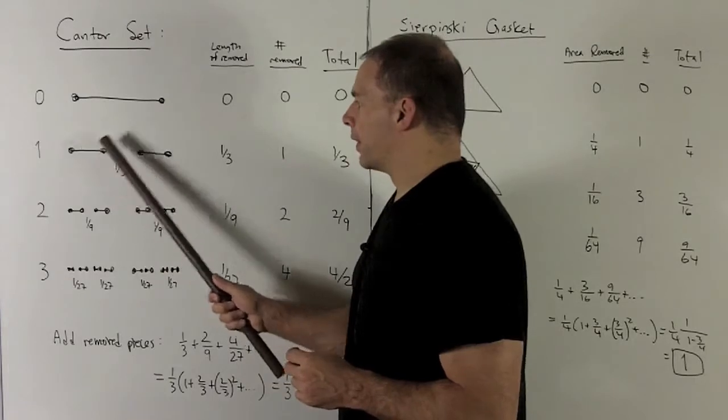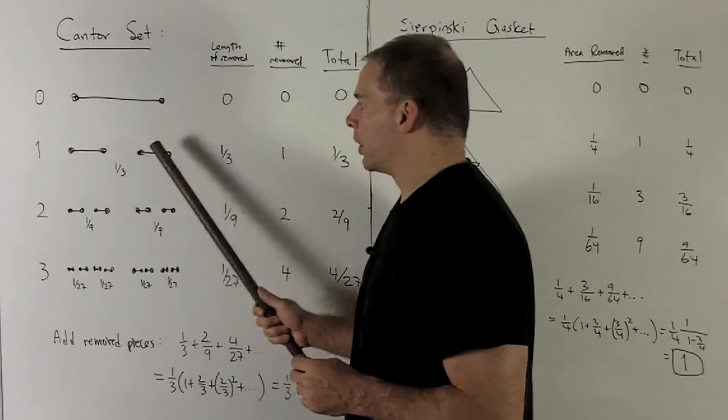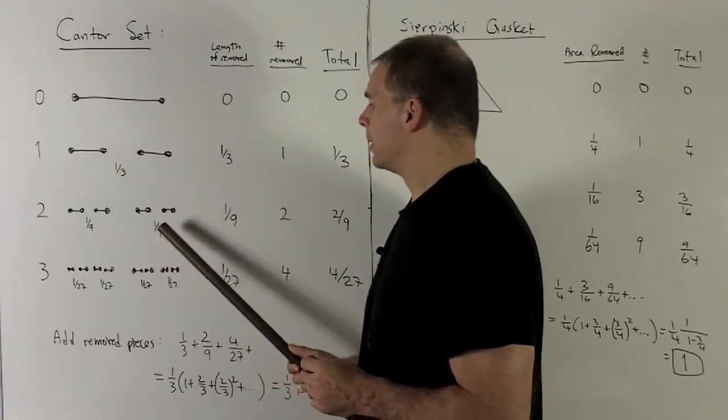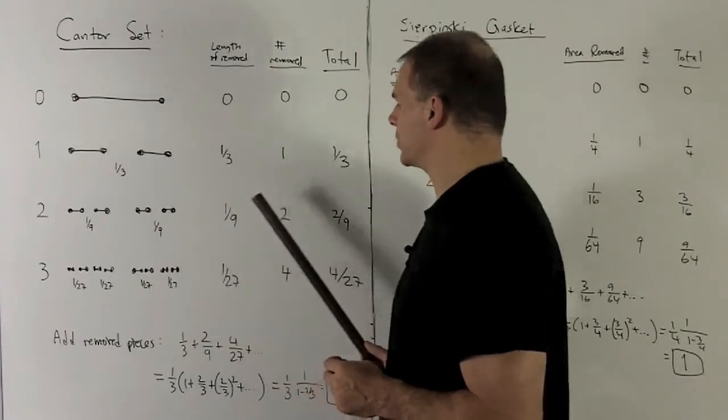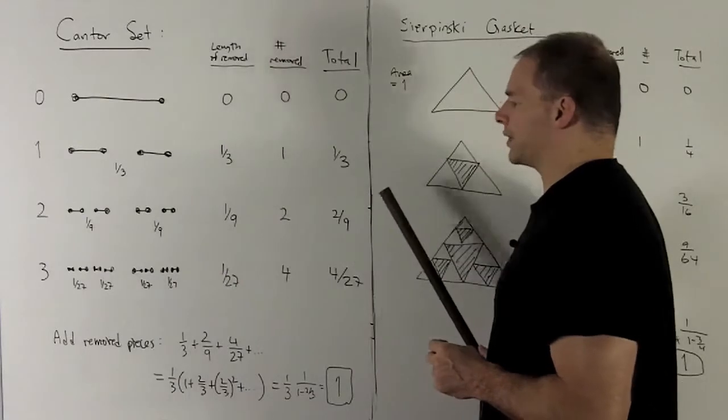For stage two, I'm going to remove the middle third of each of the segments in stage one. So the lengths we're going to be removing are going to be one third of one third, which leaves me with one ninth, and I'm going to remove that from two segments, so the total removed in stage two is two ninths.